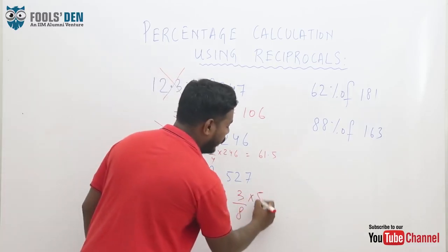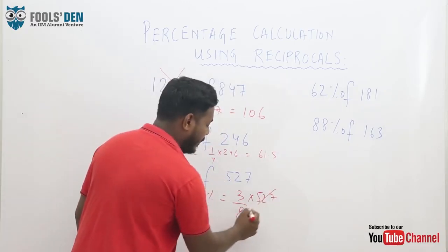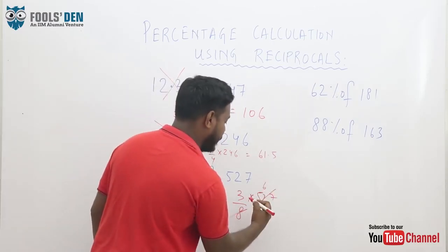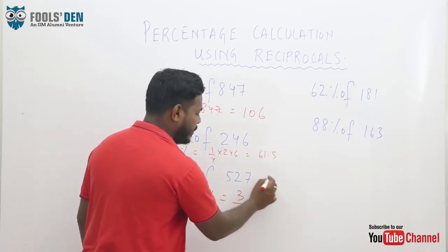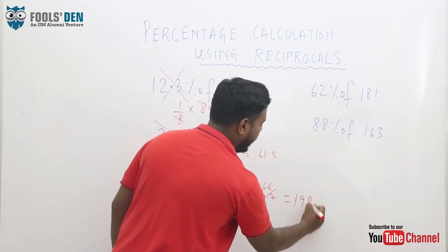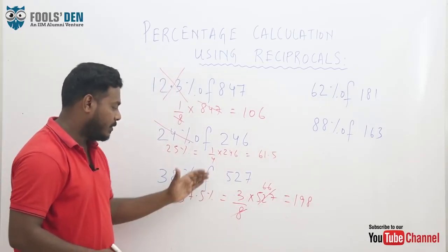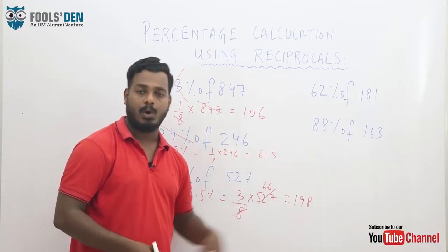So 3 by 8 into 527. This can be calculated easily. You just divide this by this. So it will be approximately 66, so 3 into 66 will be around 198. So it was a big percentage. We have simplified it using reciprocals and calculated the value. That saves a lot of time.